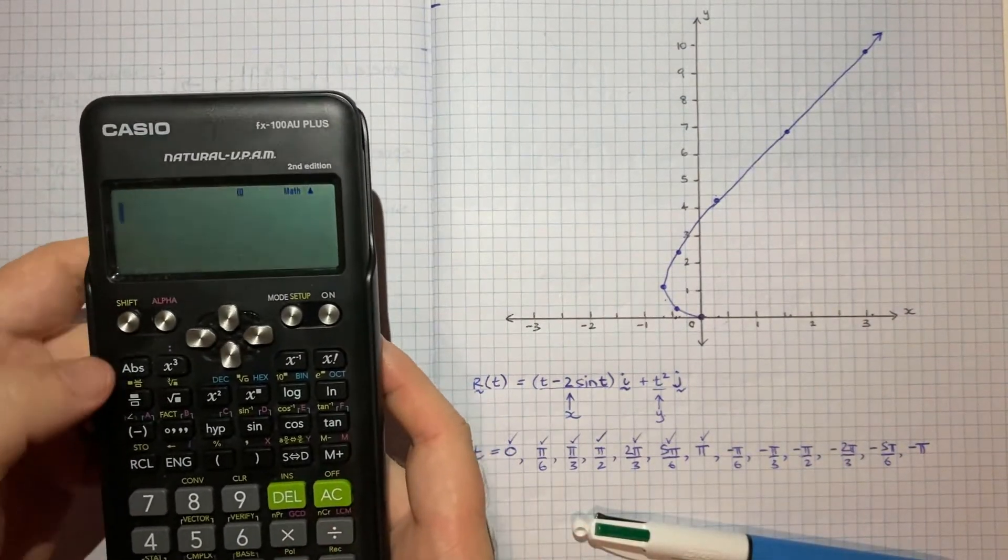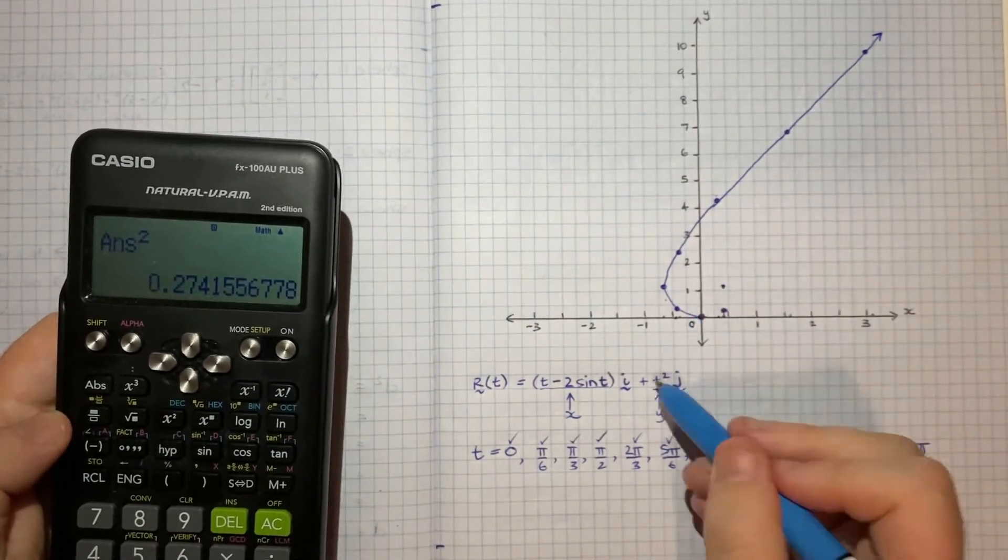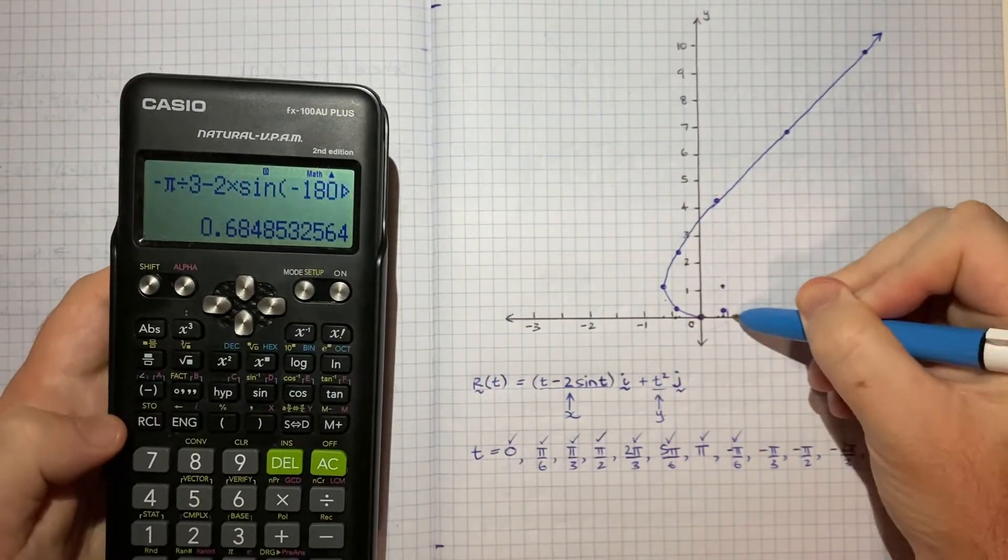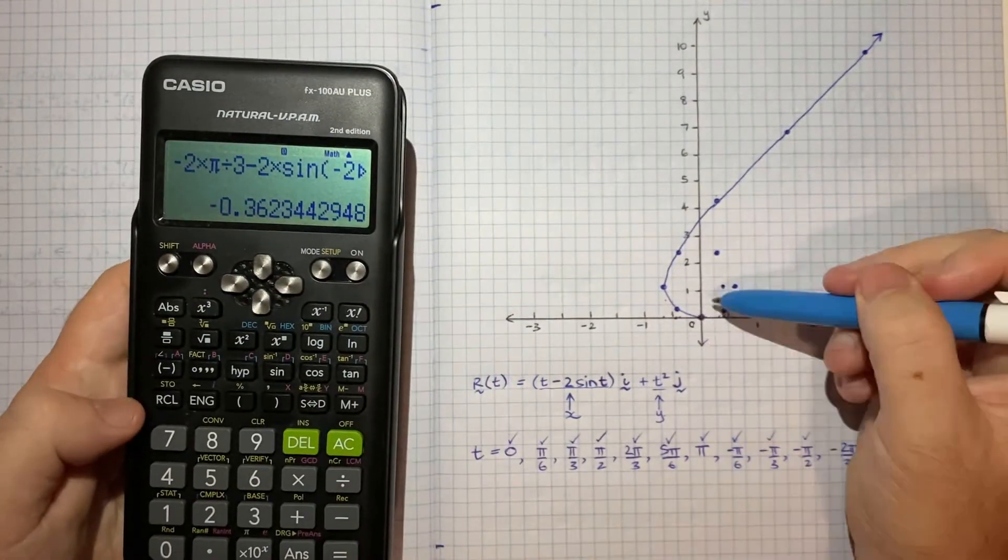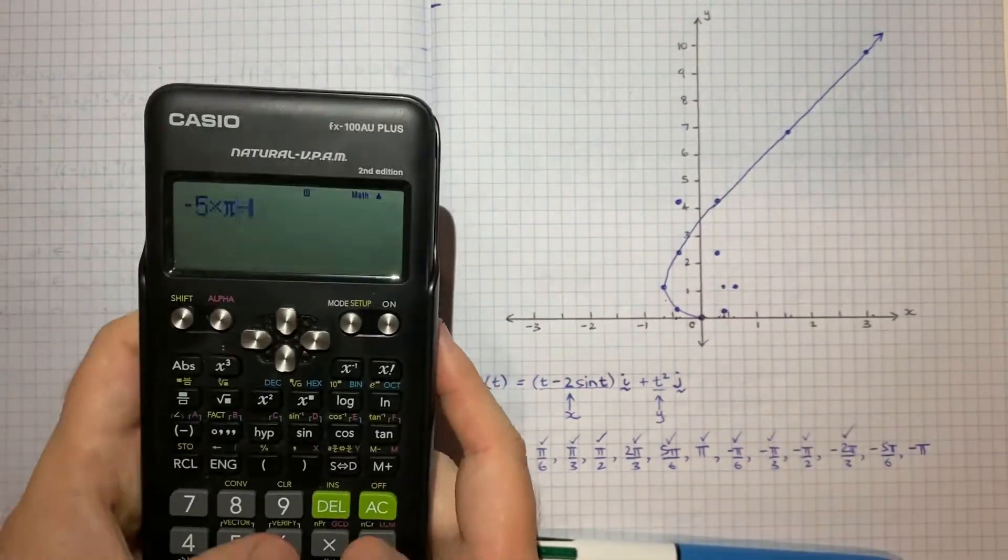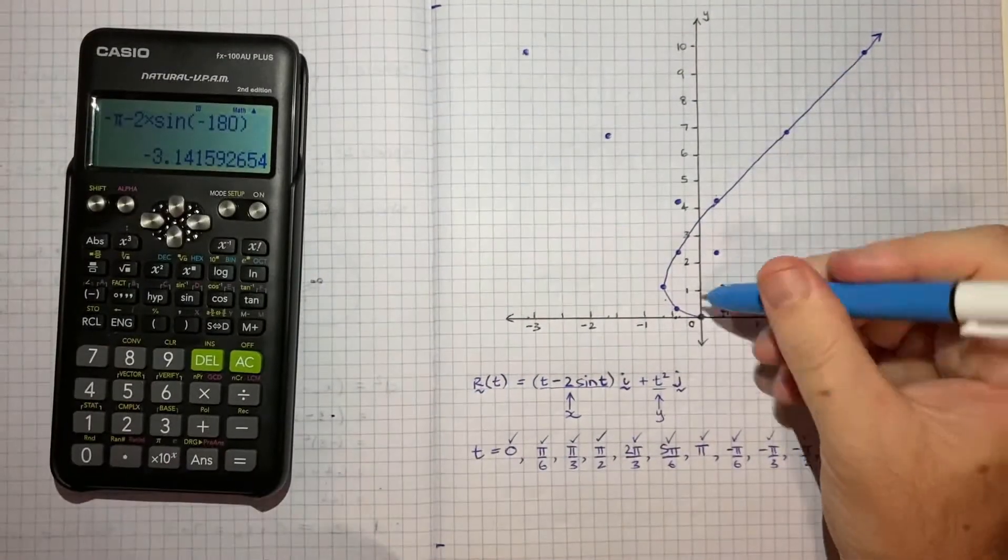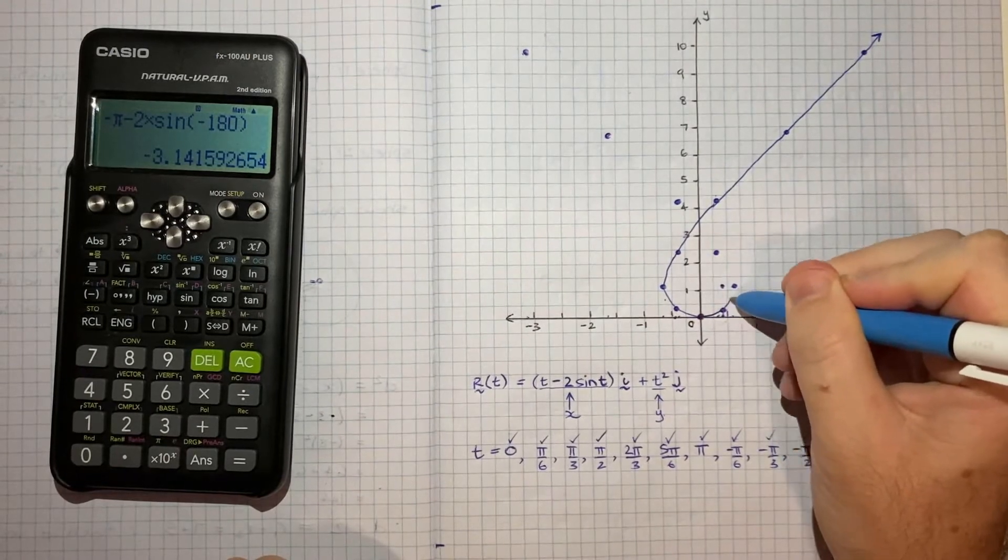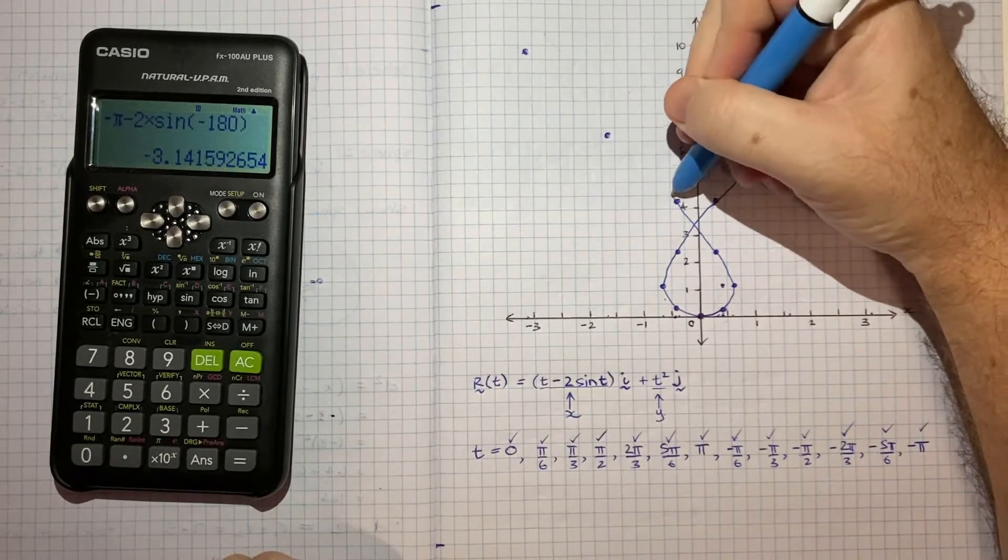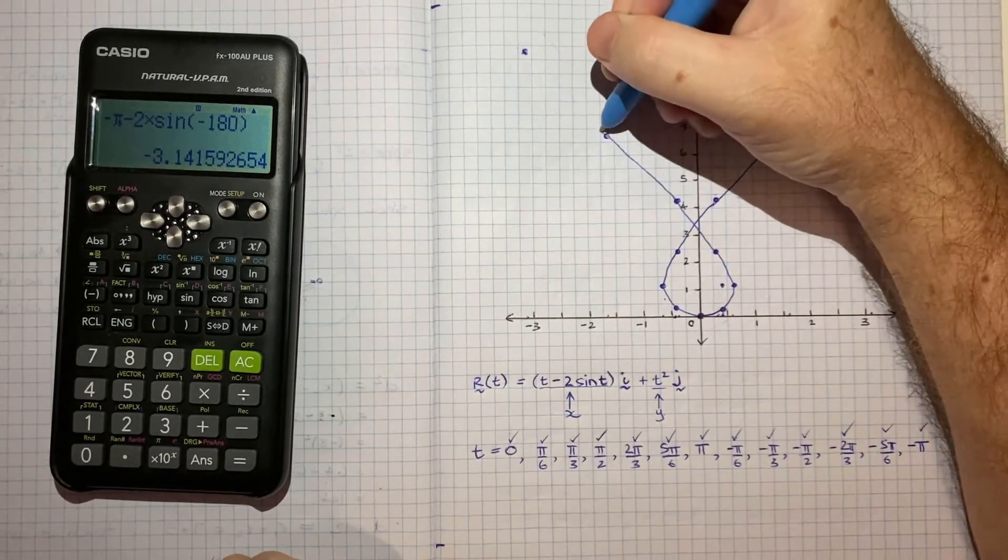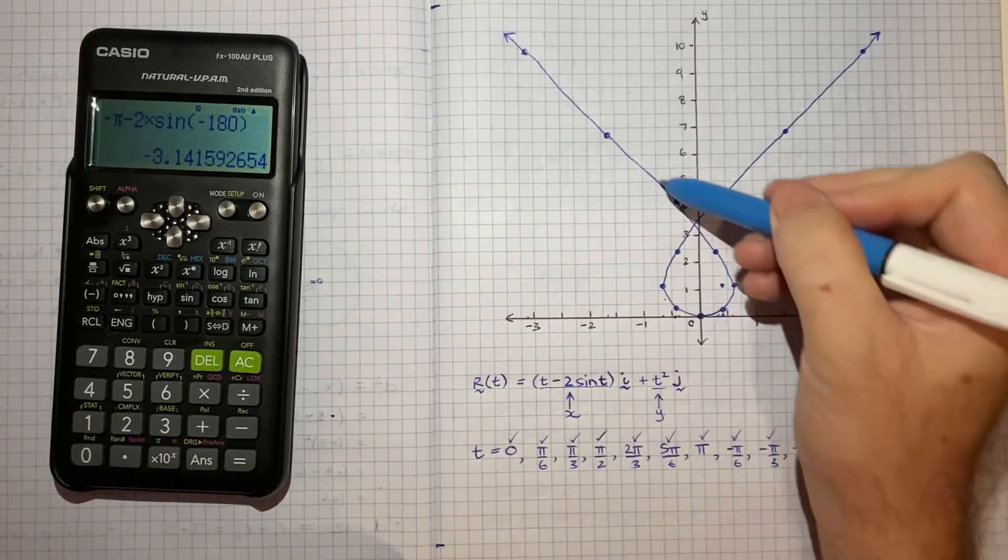So let's try negative pi on six. So now what we'll do is we'll connect these dots. And then we connect these dots. And I suspect it's symmetrical. And it's this interesting curve.